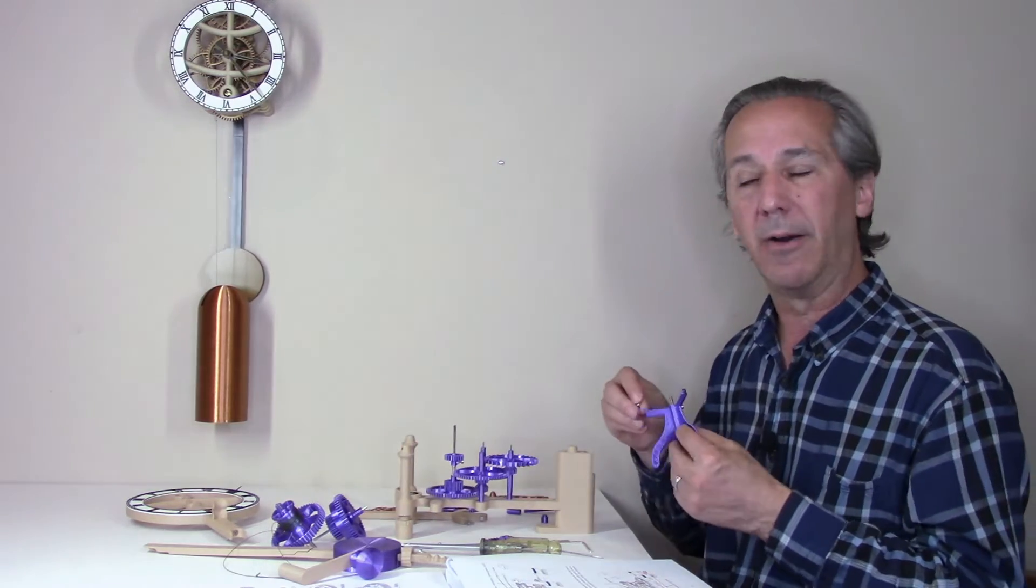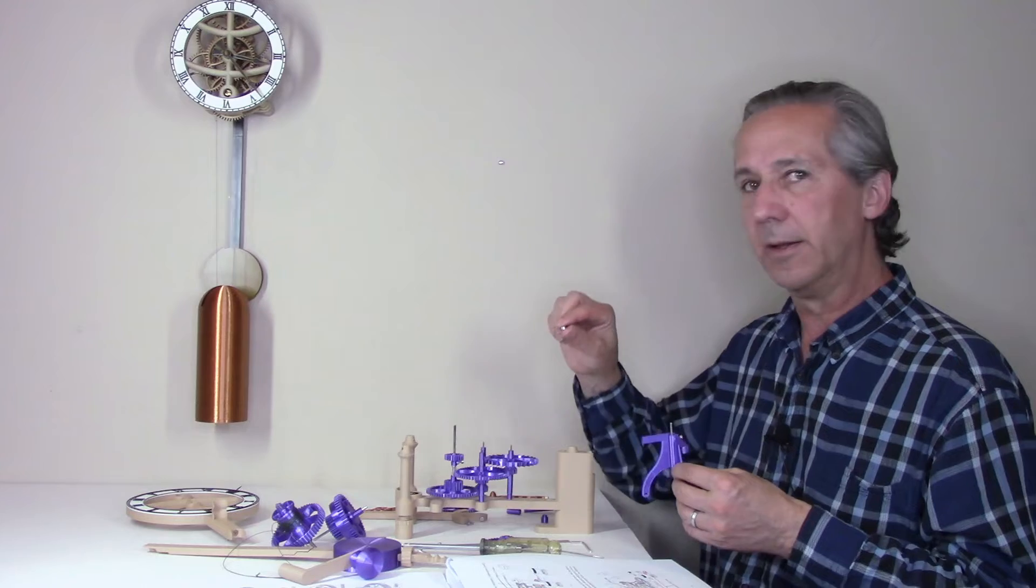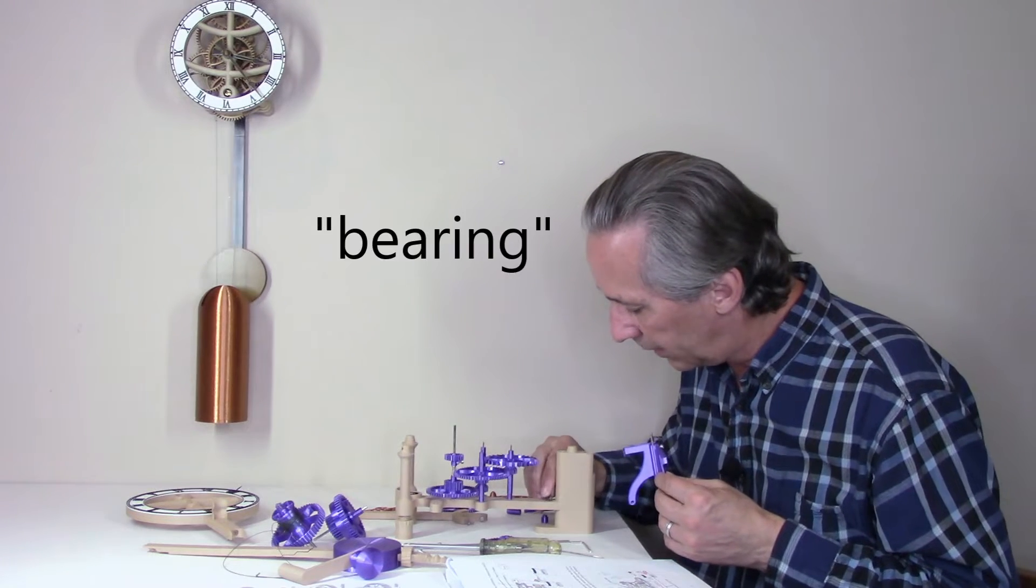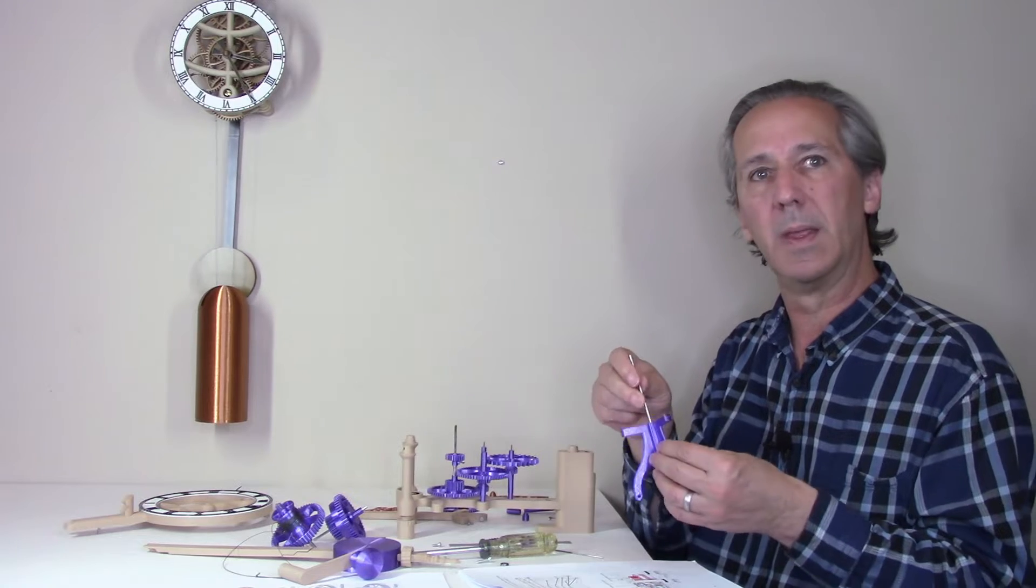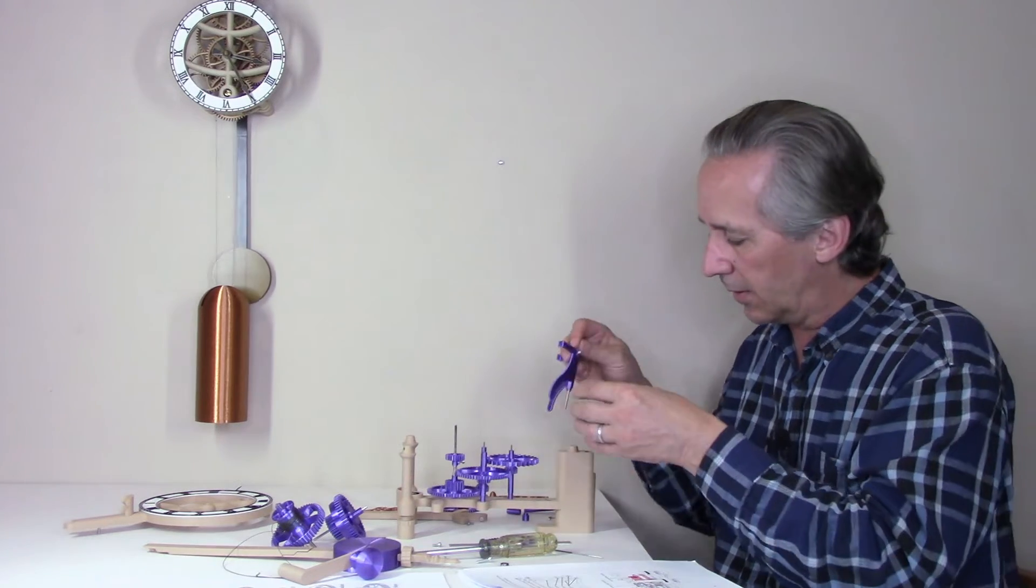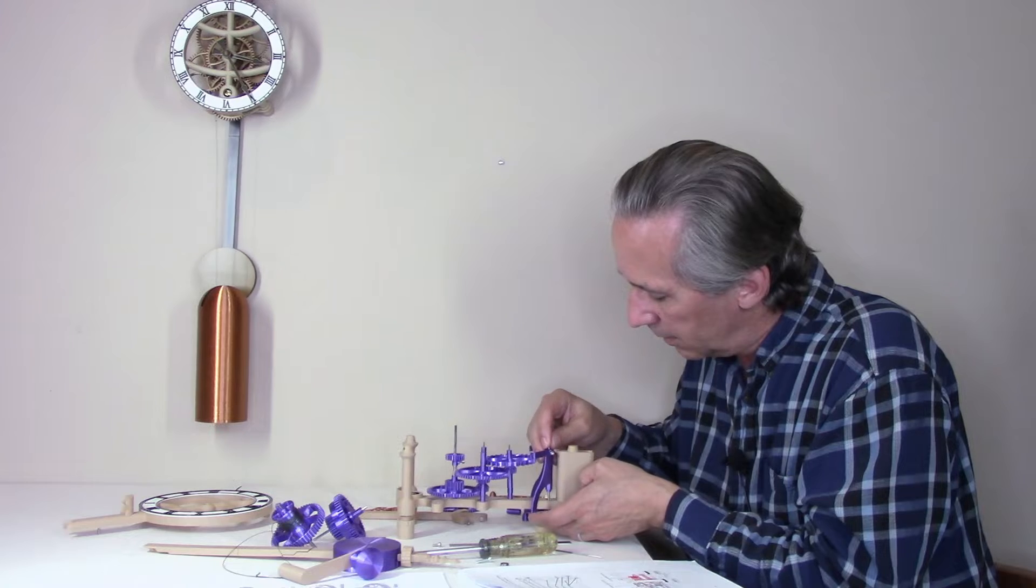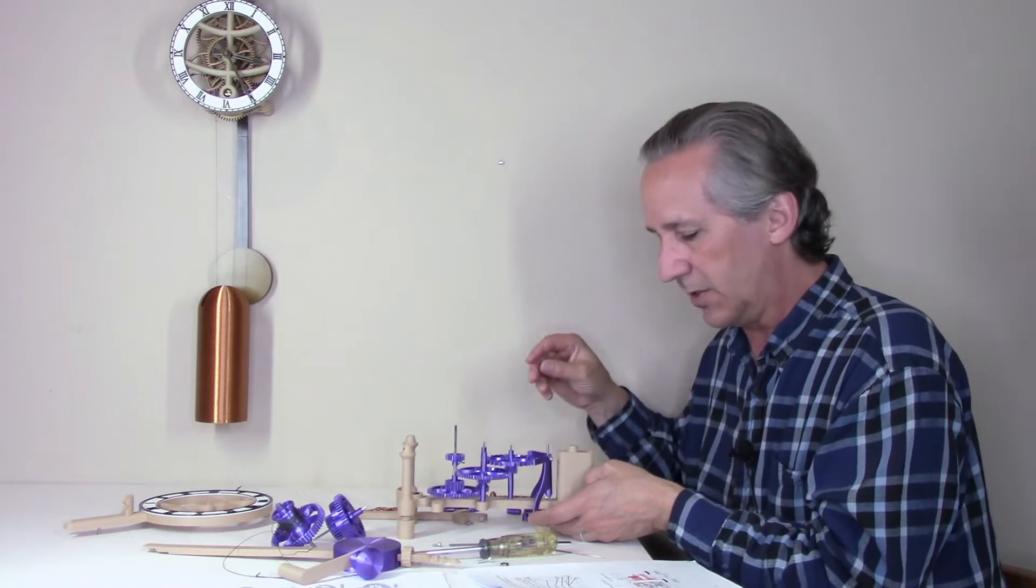Now I can add the pallet and there's a small gear that drops into the pocket. Add the arbor into the pallet and drop the pallet into position.